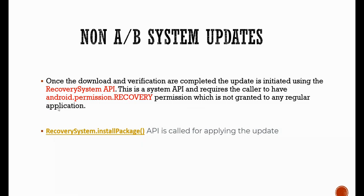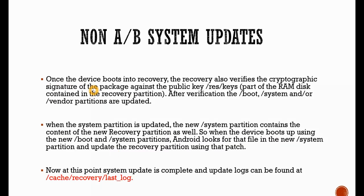This is a system API that requires a caller to have Android permission recovery. The recovery system dot install package function will be called, and when this function is called, the device will be updated to higher versions. Once the download and verification are completed, the update is initiated using the recovery system API. When the device boots into recovery, recovery also verifies the signature of the package, and all the public keys and system certificate verifications are done.